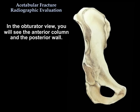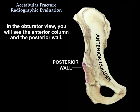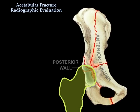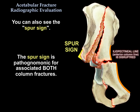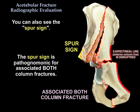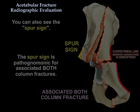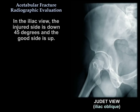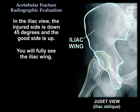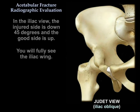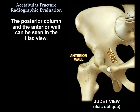In the obturator view, you will see the anterior column and the posterior wall. You can also see the spur sign, which is pathognomonic for associated both-column fractures. The iliopectineal line is pathognomonic for the posterior wall.